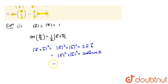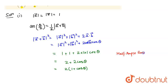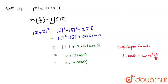As they are unit vectors, as given in the question, just plug in the values. So it would be 1 + 1 + 2(1)(1)cos(θ), which gives 2 + 2cos(θ). Taking 2 common, this becomes 2(1 + cos(θ)). By the half angle formula, we know 1 + cos(θ) can be written as 2cos²(θ/2), so it equals 2 × 2cos²(θ/2).